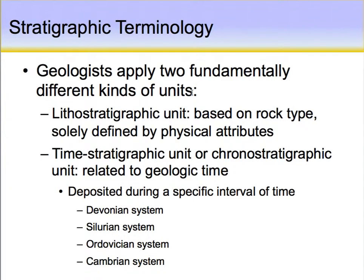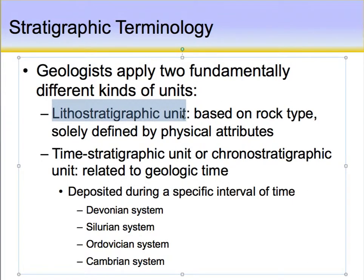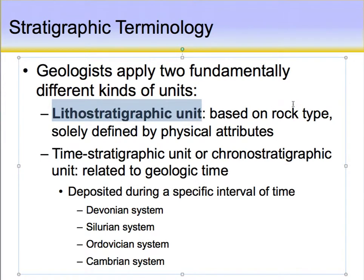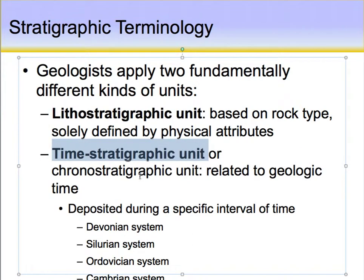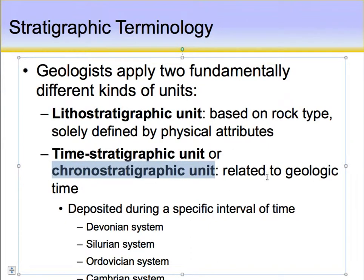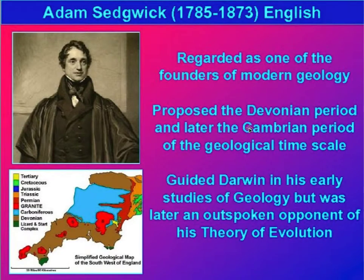Looking at some stratigraphic terminology: geologists apply two fundamentally different kinds of units. The lithostratigraphic unit is solely based on rock type and defined by physical attributes. The other is the time-stratigraphic or chronostratigraphic unit, which is solely related to geologic time. Examples include the Devonian System, Silurian System, and Cambrian System.